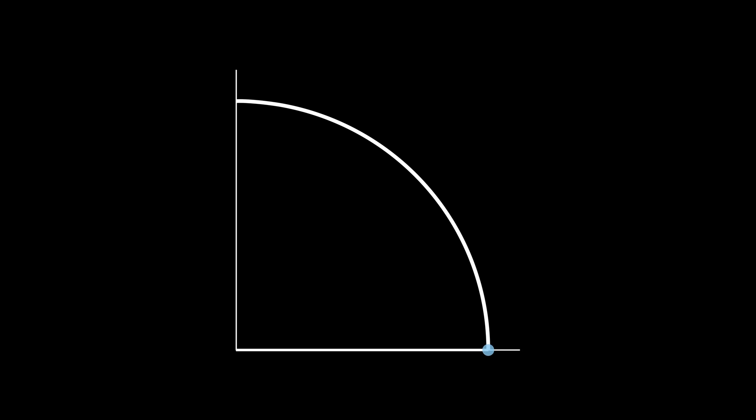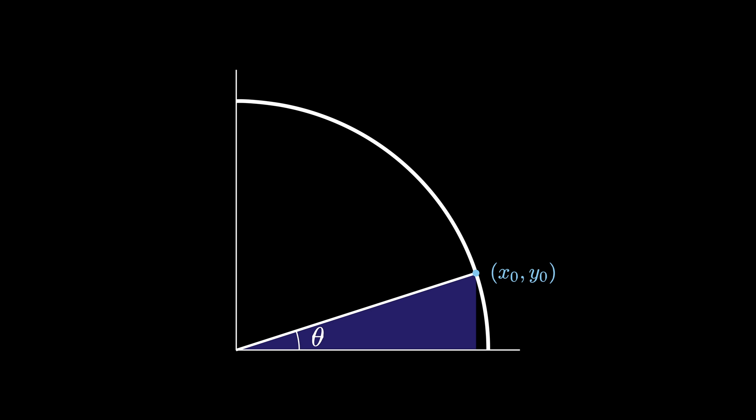Now imagine that we take a dot and we rotate a certain fixed angle called theta. Let's label the coordinates of the point x0 and y0 so that this triangle shown here has a width of x0 and a height of y0. Let's label the angle complementary to theta by alpha.